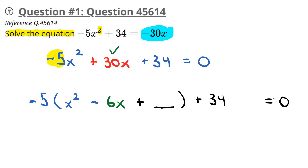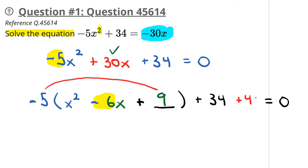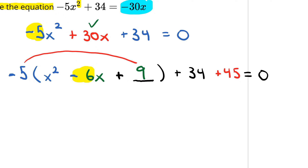After that, we want to take the middle number, which is negative 6, and divide that by 2. Negative 6 divided by 2 is negative 3, and then we square it, which gives us 9. And then finally we do a distribution step: negative 5 times 9 is negative 45, so we need to add the 45 back in. That's the first step of completing the square.